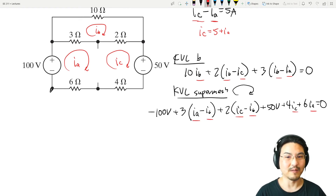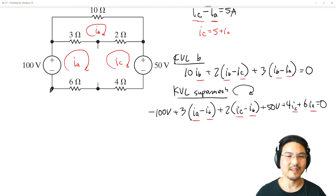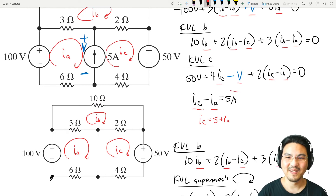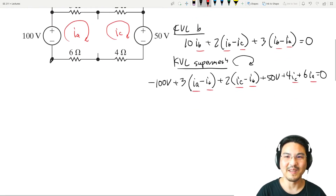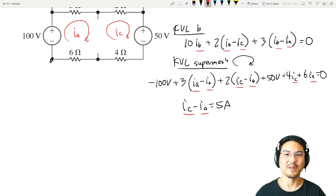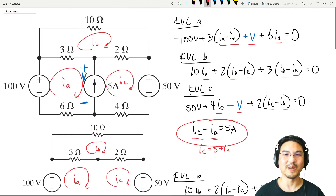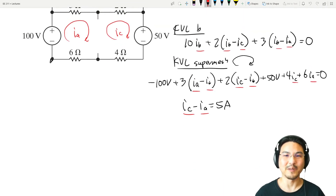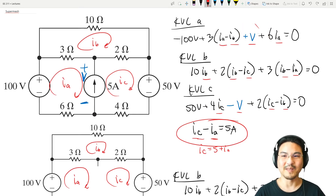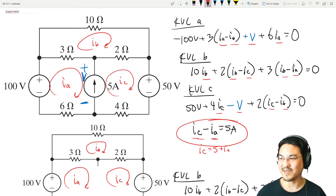So that's for the super mesh, and we have two equations and three unknowns. The last thing we do is relate mesh currents Ia and Ic to the 5-amp source, exactly as we did before: Ic minus Ia equals 5. Now we have three equations and three unknowns. The super mesh technique saves us from having to consider the unknown voltage across the current source — that's the time-saving strategy.